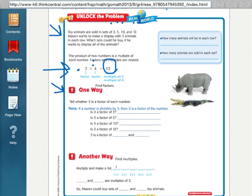Our first way that they say we can answer that is to tell whether 3 is a factor of each of those numbers. So, is 3 a factor of 3? Yes, it is. Because 3 divided by 3 works.